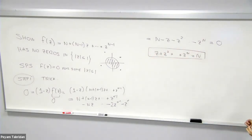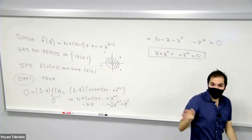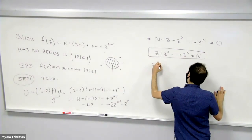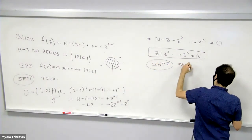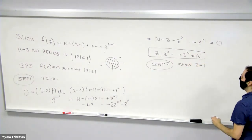And what I would like to show in the next step is that the only solution of this with the requirement that lives in the unit disc is z = 1. So step two, show z = 1.